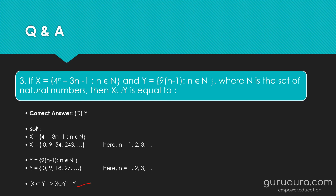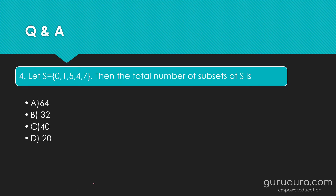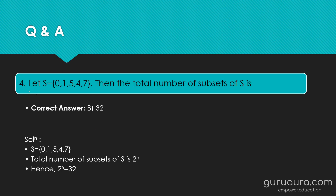Hope you got the right answer. Now let's move to the next question. Let S = {0, 1, 5, 4, 7}. Find the total number of subsets of S. The number of elements is 5. Using the formula 2^N, where N is the number of elements, we get 2^5 = 32. So option B is correct, that is 32.